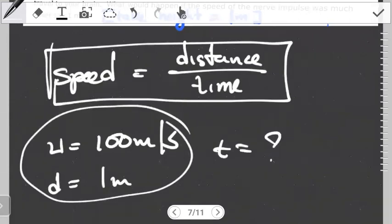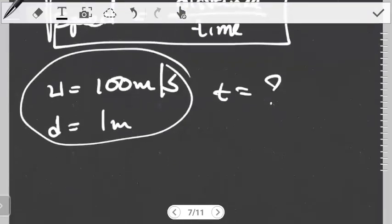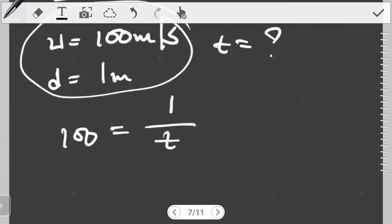Since the speed is constant, we have that 100 meters per second, it's not changing. And we have distance, the height of the person, one meter. And then we have time, which is what we're looking for.